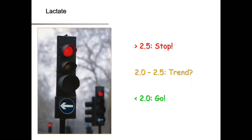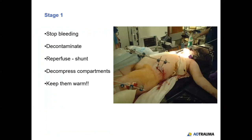The lactate traffic light system: below 2 is green — plan to proceed. Above 2.5 is red — stop, plan to normalize lactate, consider damage control surgery. The orange zone between 2 and 2.5 requires looking at the trend: if downward, proceed; if upward, you are heading towards dangerous territory. For stage one: stop the bleeding, decontaminate any gross contamination, pre-perfuse any vascular injuries with a shunt rather than attempting reconstruction, and decompress any compartment syndrome.